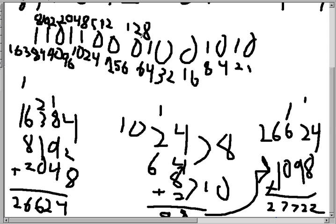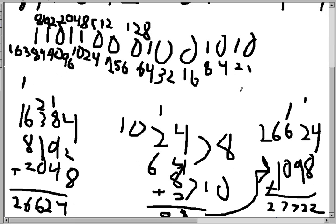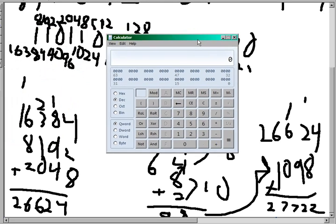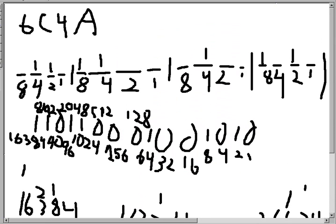So the decimal answer of 6C4A is 27,722. I know we're not supposed to use a calculator, but let's check. Yes, 6C4A hex is 27,722 decimal. That's our answer.